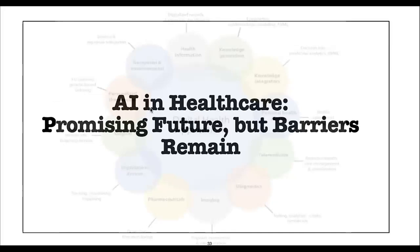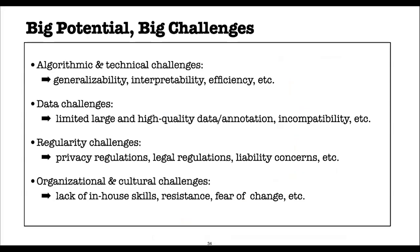I will end the talk by touching on some scientific and ethical challenges facing the widespread adoption of AI in healthcare. These challenges can be categorized into technical challenges such as the algorithm's ability to generalize across settings and datasets, explainability, and efficiency. A lot of work in medical imaging AI focuses more on performance than generalizability, interpretability, or fairness. There is always a trade-off between fairness and performance, but in order to build a system deployable in real-world settings, efficiency, explainability, generalizability, and fairness all need to be addressed.